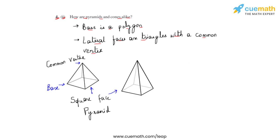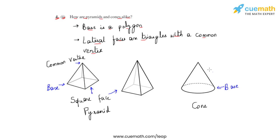Now let us see what happens in the case of a cone. As we observe this cone in the figure, the base is circular. Also, if we observe this cone from its side, we will see a triangle where the triangle meets at a point which we can consider as the vertex. If we view this cone from different angles, we observe different triangles and all of them meet at this common vertex. Hence we can say that this cone resembles a pyramid.